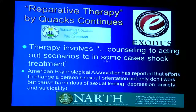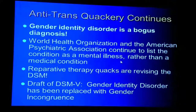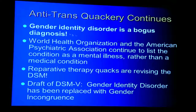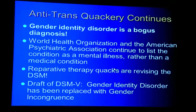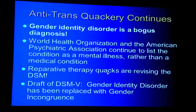Gay people got themselves removed from the DSM through political activism — there was never any science in that story. The psychiatrists never had a shred of evidence that gay people are crazy. Yet reparative therapy continues, even using shock treatment still, as reported in an article from this month. The anti-trans quackery continues too: trans people are classified as having gender identity disorder in the DSM, and both the World Health Organization and the American Psychiatric Association consider trans people crazy. They have given the revision of the DSM over to reparative therapy quacks, who are merely changing the name to placate trans activists — but trans people are still classified as disordered.